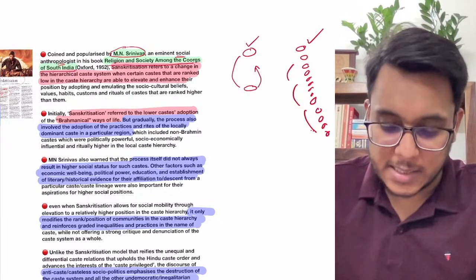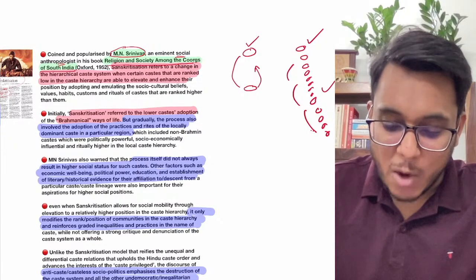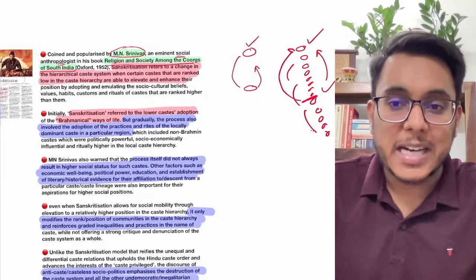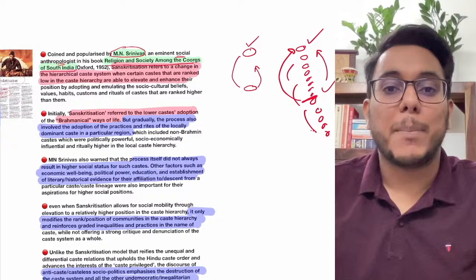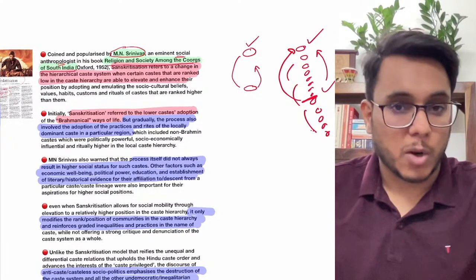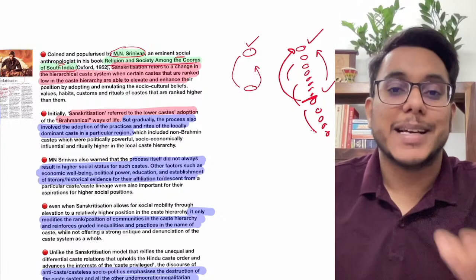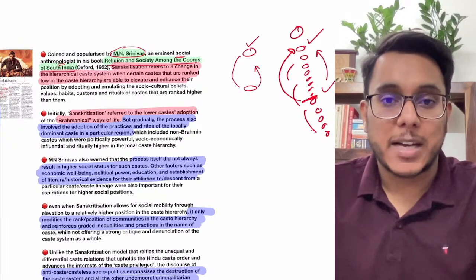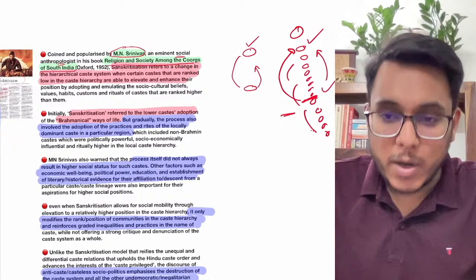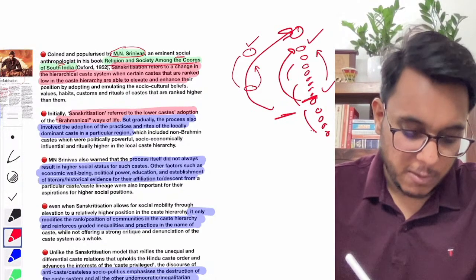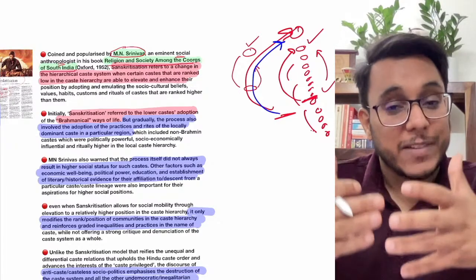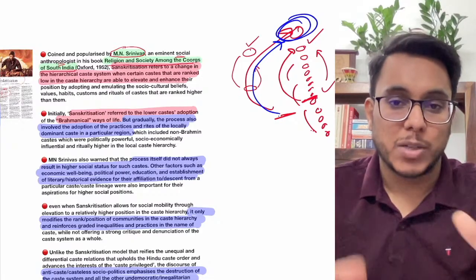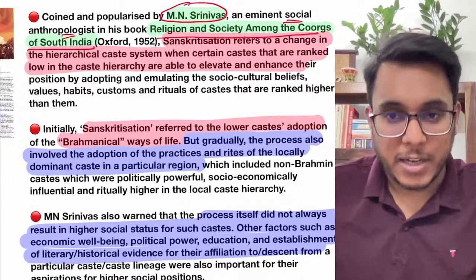In order to gain upward mobility, a person from a lower caste tries to imitate the practices of an upper caste. For example, upper-caste people wear a sacred thread called janeu — some lower-caste people will also start wearing it. Or if certain upper-caste people follow a particular ritual, lower-caste people start following that same ritual, expecting to move up the hierarchy over time. This is Sanskritization.